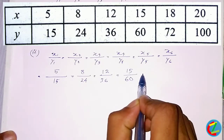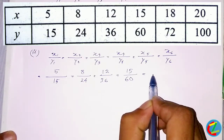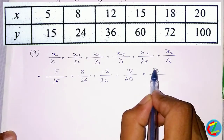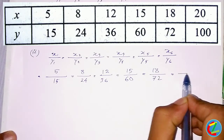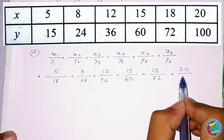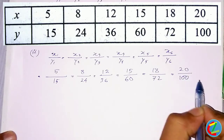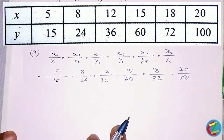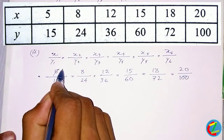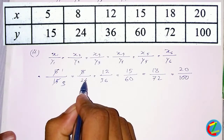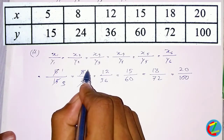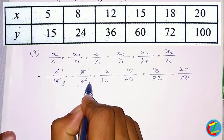15 divided by 6, 18 divided by 72, 20 divided by 100. 5 divided by 32, 18 divided by 32.